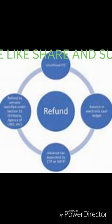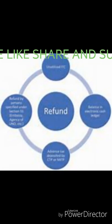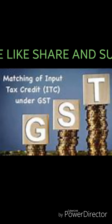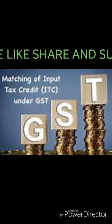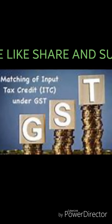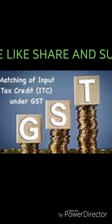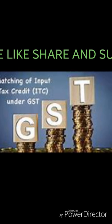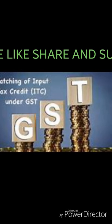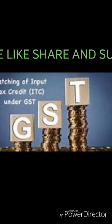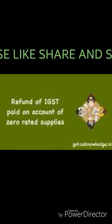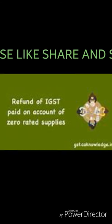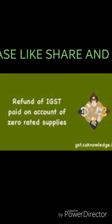Document 7: A statement declaring that we have not claimed refund earlier against the relevant invoices as mentioned in the application for sanction of refund in respect of integrated tax paid on account of zero-rated supplies, or in any other way, during the month or quarter of the relevant period.